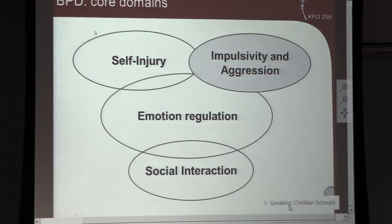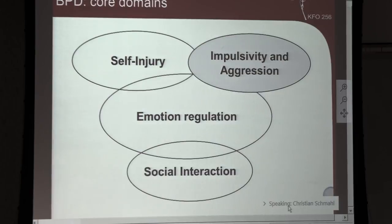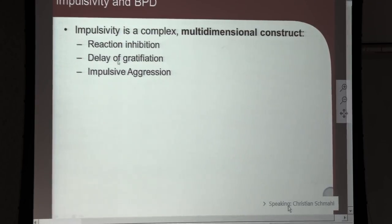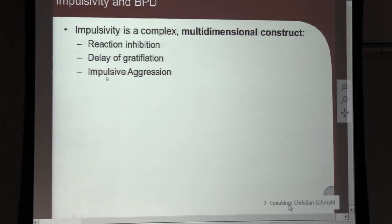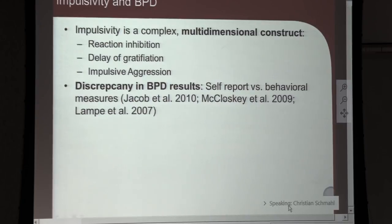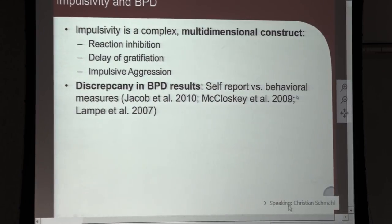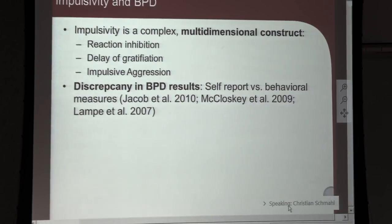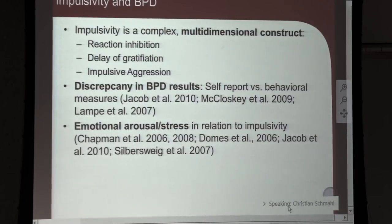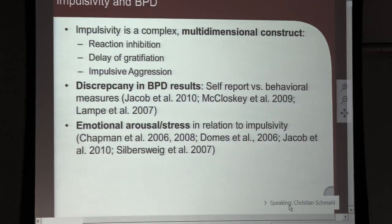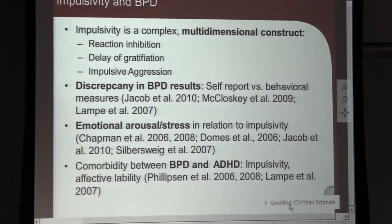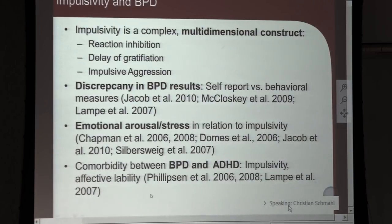Shifting to impulsivity and aggression: impulsivity is a complex, multi-dimensional construct with facets including reaction inhibition, delay of gratification, and impulsive aggression. In BPD there is an interesting discrepancy — patients report being impulsive, but behavioral tests rarely find higher impulsiveness scores. Impulsivity may be related to emotional arousal or stress levels, and also to the comorbidity of borderline and ADHD, both characterized by impulsivity and affective lability.